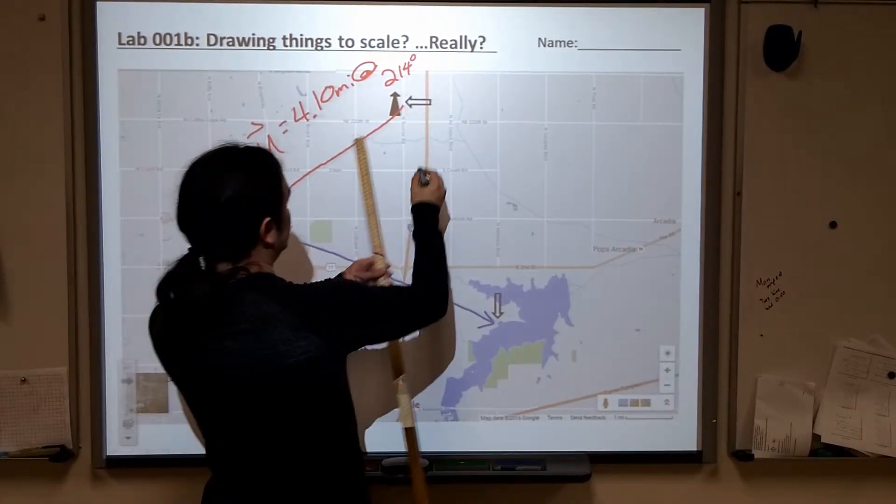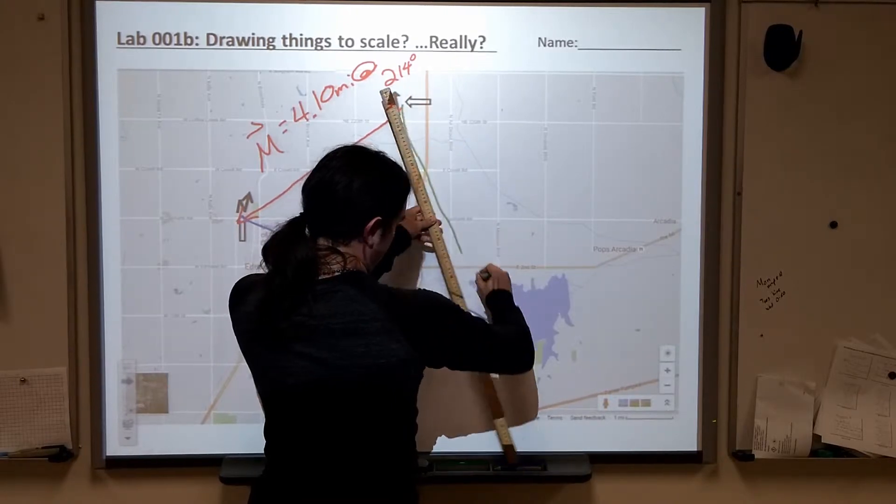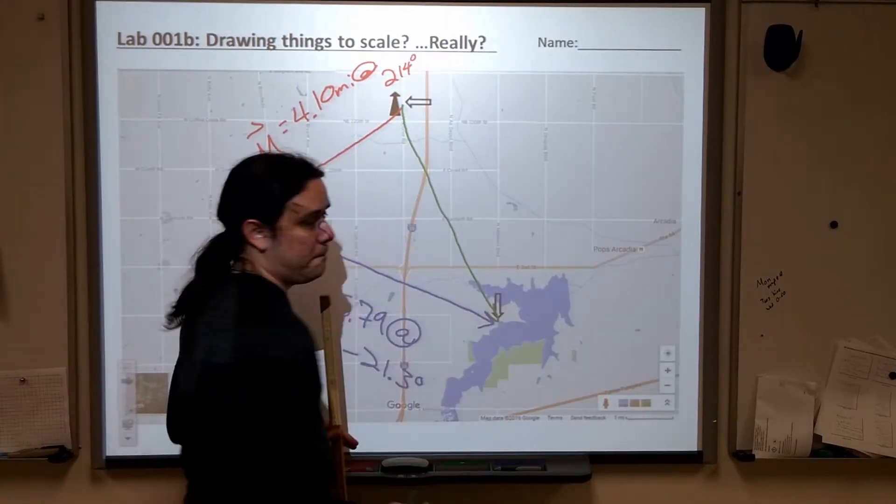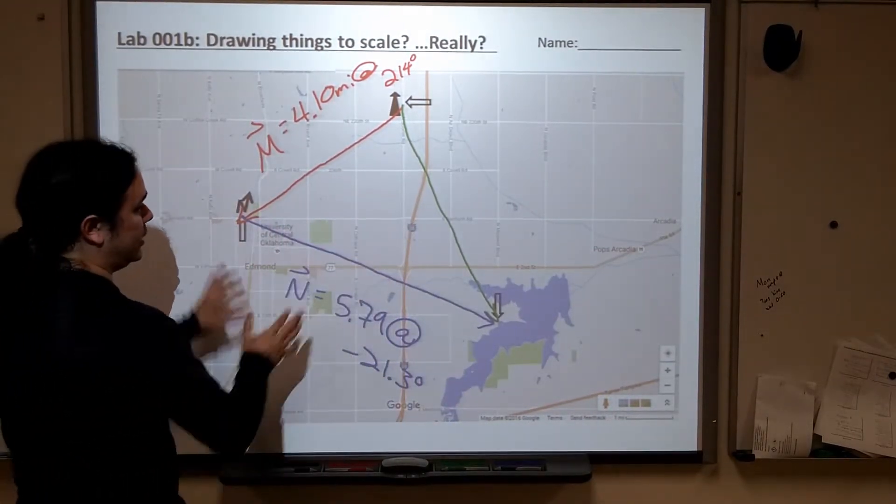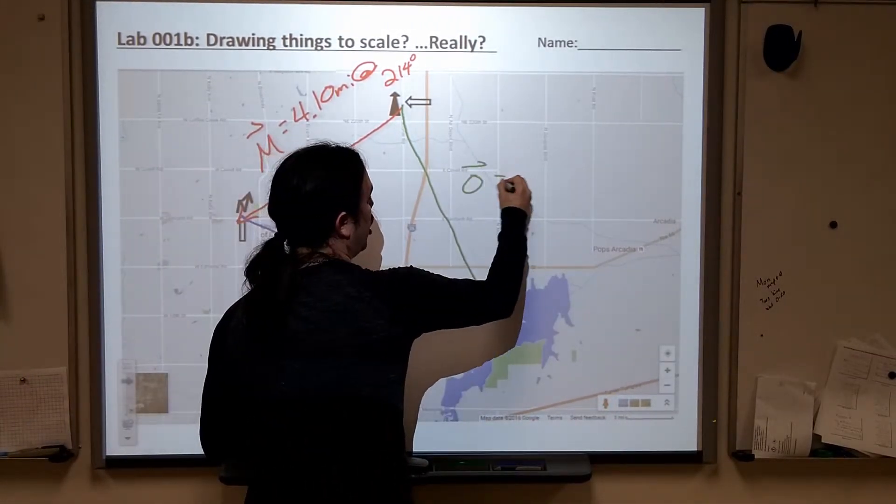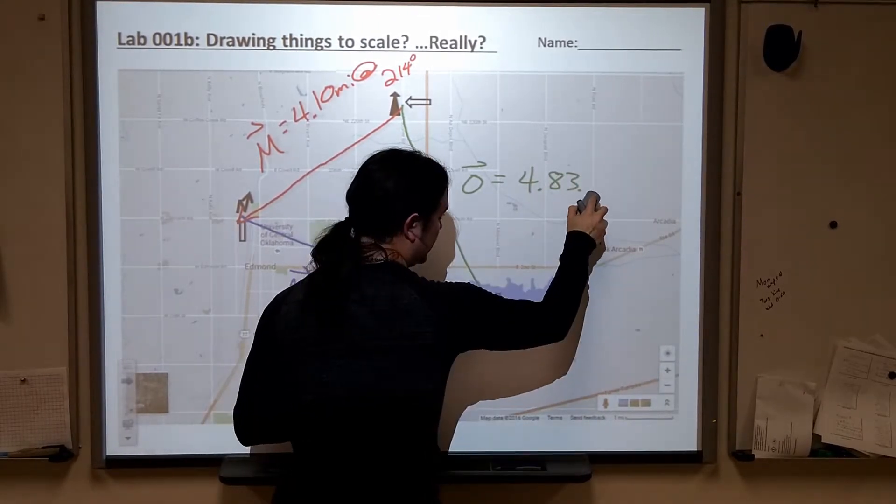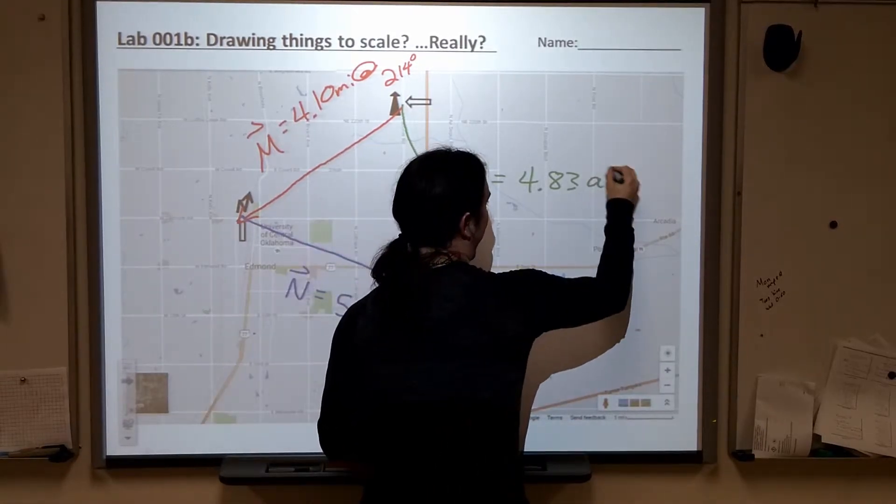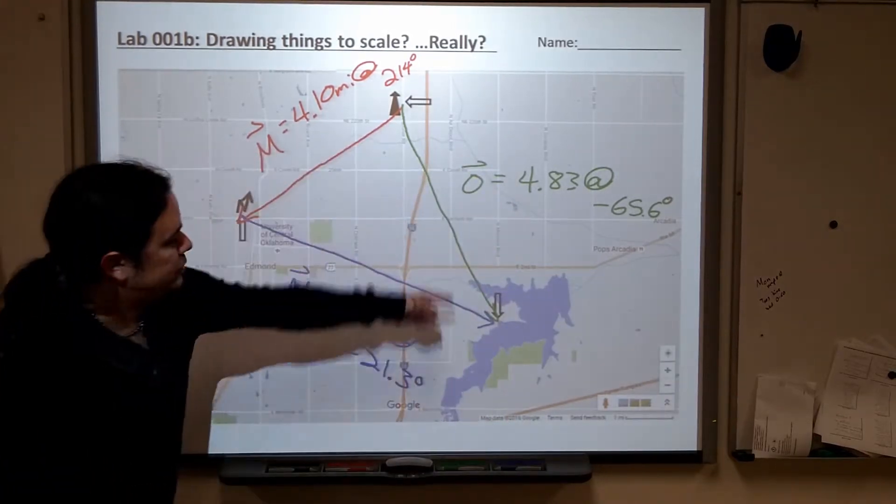And then we added them tail to tip, and we should find the following vector. Not my best line ever. I'm going to do something else in this video and show you another way that we can do this and help verify this a lot better. Although, you should be able to do this by hand because unlike the smartboard, you can actually touch your paper and it won't freak out. So O, we found, should come up to something like 4.83 at negative 65.6 degrees. That's our displacement vector here.